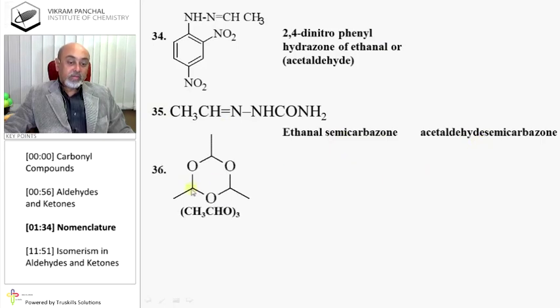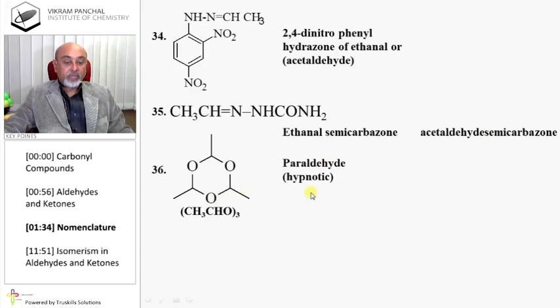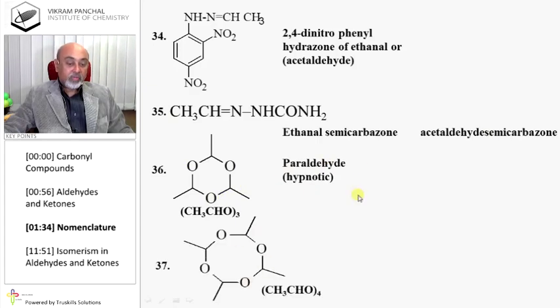This is a polymer of three aldehyde units, so it is known as paraldehyde. This is a four-unit cyclic aldehyde polymer, so it is called metaldehyde.